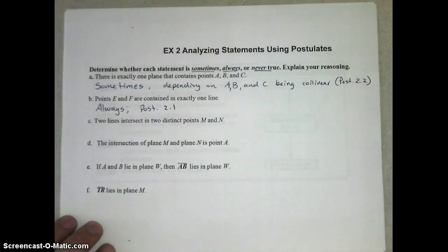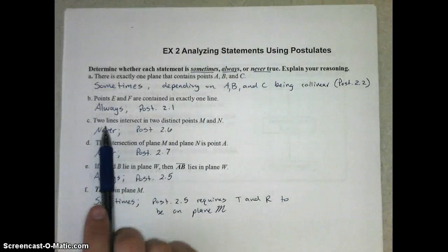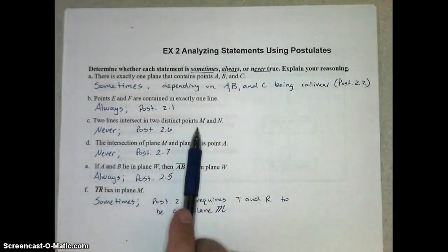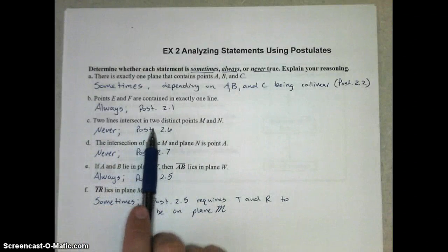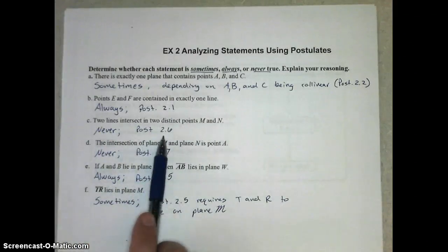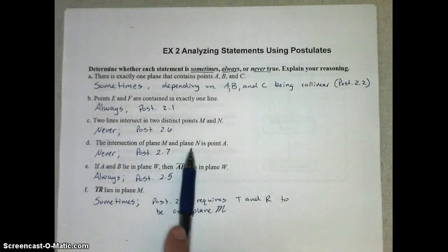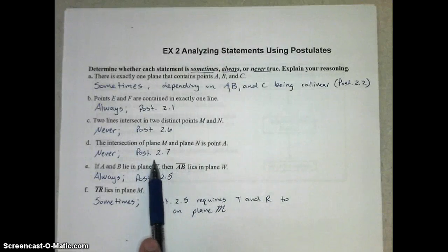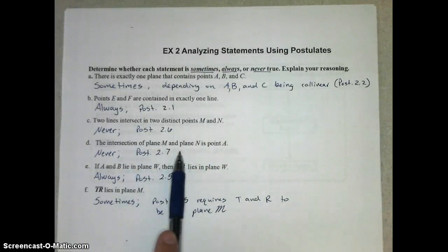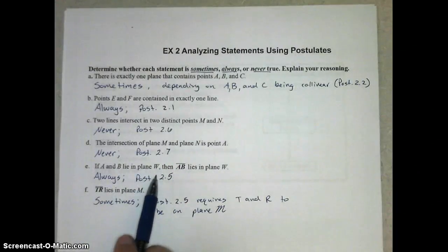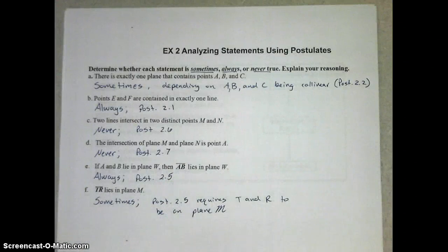Alright, here are the answers we should get. If we have two lines intersecting at all, they intersect in exactly one point. So this is never true by postulate 2.6. Part D says the intersection of plane M and N is a point. Well, that's not true because of postulate 2.7. If we have two planes intersecting, they intersect in a line, not just a point. So that's never true. Part E, if A and B lie in plane W, then line AB lies in plane W. That's always true by postulate 2.5.